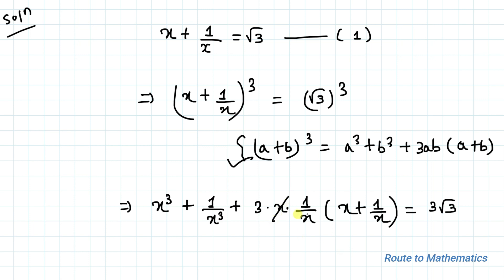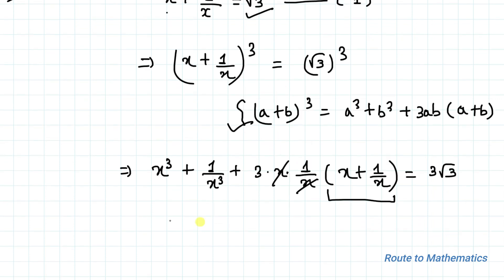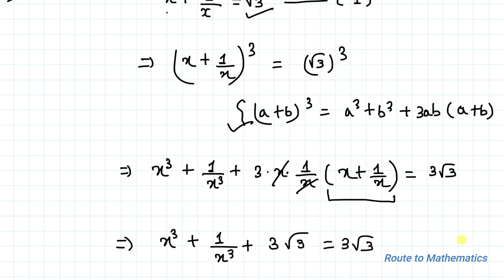From here, x and x get cancelled out. So here we can see that x plus 1 by x from equation 1 gives us x plus 1 by x equals to root 3. Let's put that value in: we have x cube plus 1 by x cube plus 3 multiplied with root 3 equals to 3 root 3.